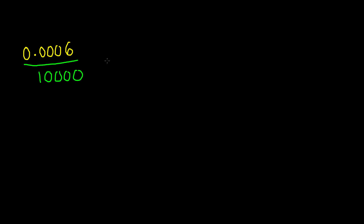So our denominator is going to be 10,000. And our numerator is going to be the number 6. So 0.0006 is the same thing as 6 over 10,000. This is our fraction.